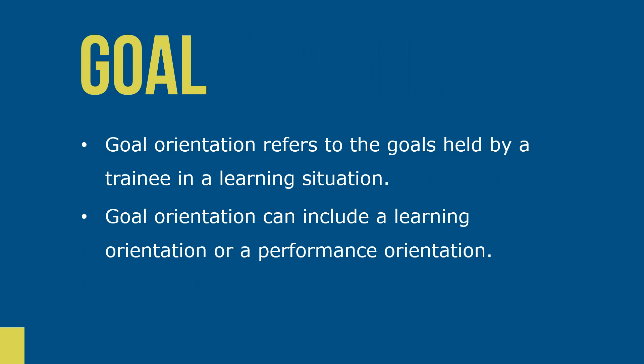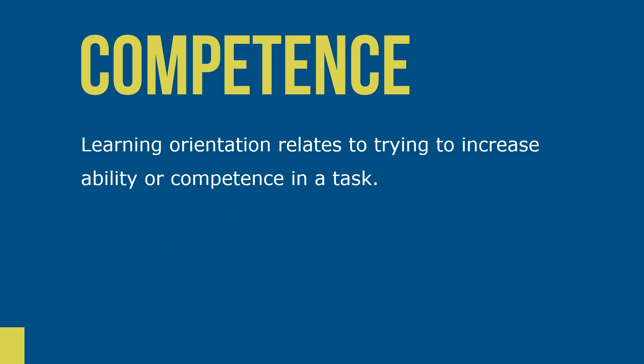Goal orientation refers to the goals held by a trainee in a learning situation. Goal orientation can include a learning orientation or a performance orientation. Learning orientation relates to trying to increase ability or competence in a task. People with a learning orientation believe that training success is defined as showing improvement or making progress.